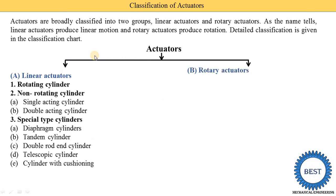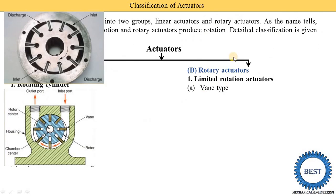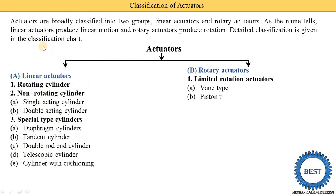Now the fourth major category is rotary actuators — at the output we get rotary motion. In rotary actuators, the first type is the limited rotation actuator. In limited rotation actuators, the first subtype is the vane type. This is the actual diagram and actual component, showing the rotor and various vanes, similar to the vane type pump we already understand. A vane type pump and a vane type actuator both exist, and a detailed video will be made shortly.